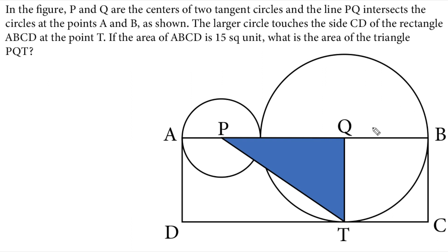We are given the area of the rectangle ABCD, so that is 15. The rectangle area is equal to 15. We need to identify the side lengths of the rectangle to use this information.